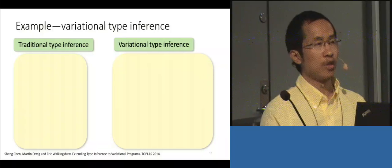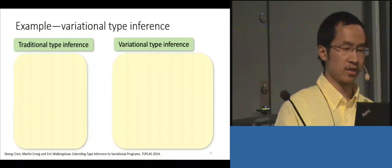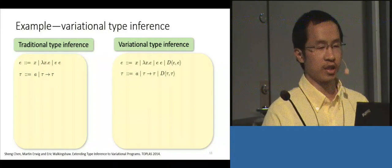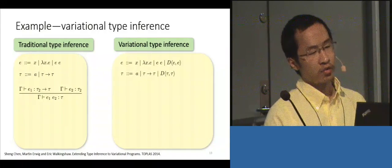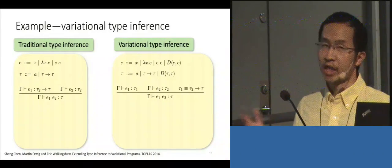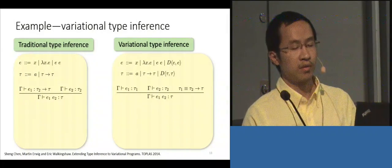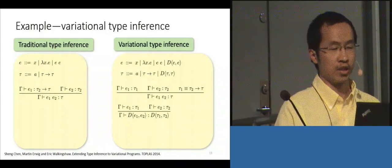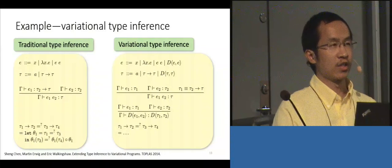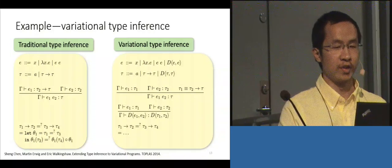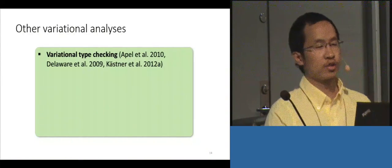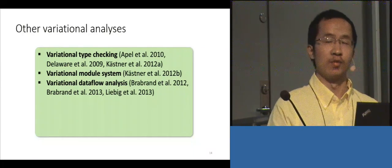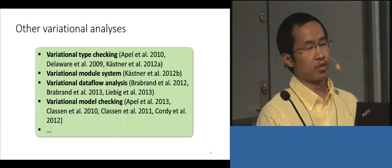Let's look at a concrete example of how we obtain variational analysis from traditional analysis. We first add variation to both the syntax of expressions and types so we can represent variational results. We also have to adapt the analysis for the application rule, introducing a type equation relation to make the application go through. We must also design a rule for typing choices, and finally adapt the unification algorithm to deal with variations — which is the most difficult part of variational type inference. In previous years, many such variational analyses have been created, including type systems for different program syntaxes, model checking, theorem proving, and program slicing.